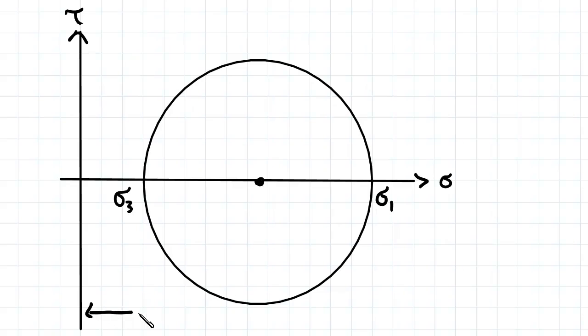And the distance to the centre of this circle can be found by the average of the principal stresses. And the radius is found by sigma 1 minus sigma 3.